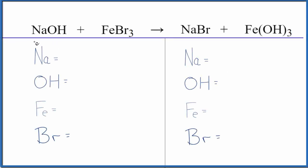In this video, we'll balance the equation NaOH plus FeBr3. This is sodium hydroxide and we have iron 3-bromide. We'll also take a look at the type of reaction.